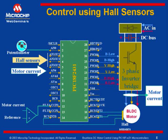Hall sensors are used for commutation in this example. These three Hall sensors are connected and can be either connected to interrupt pins INT0, INT1, and INT2 on the PIC 18F access 3-1. In this case, I have taken an example of the 18F2431, a 28-pin member of the 18F access 3-1 family.